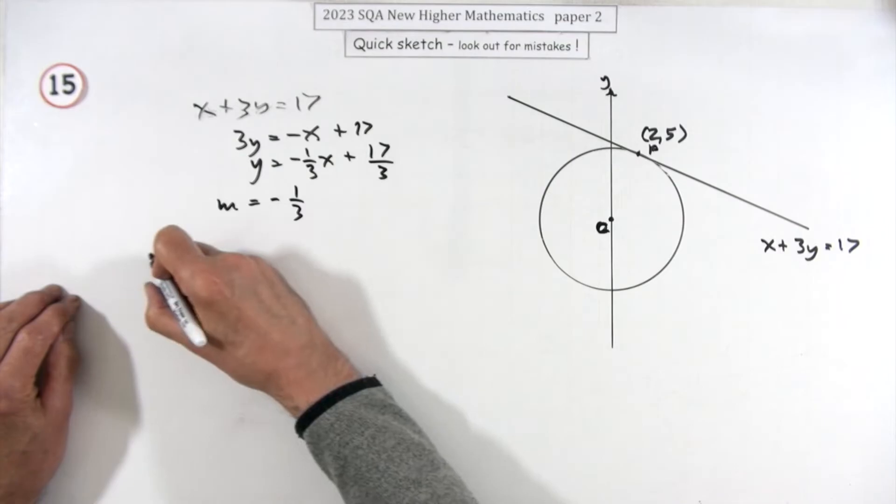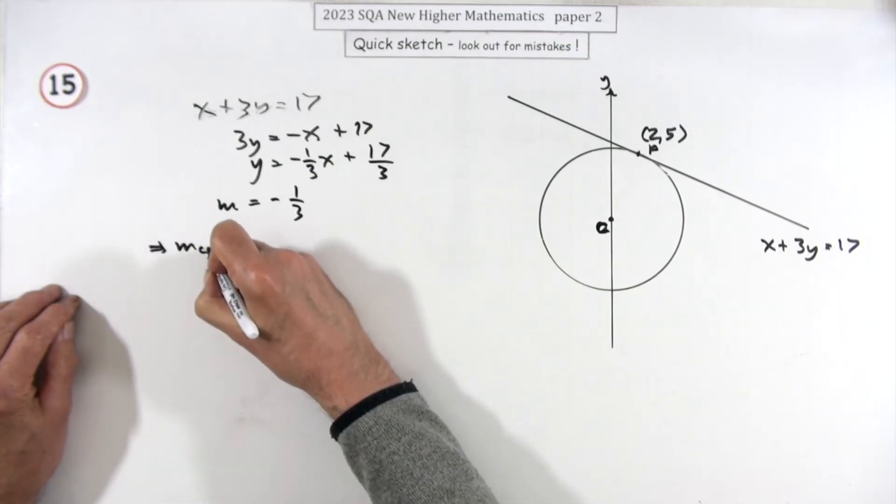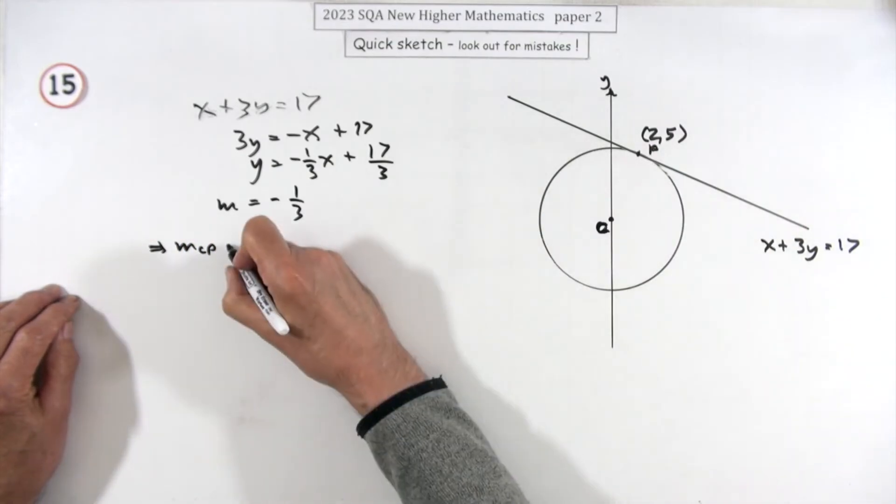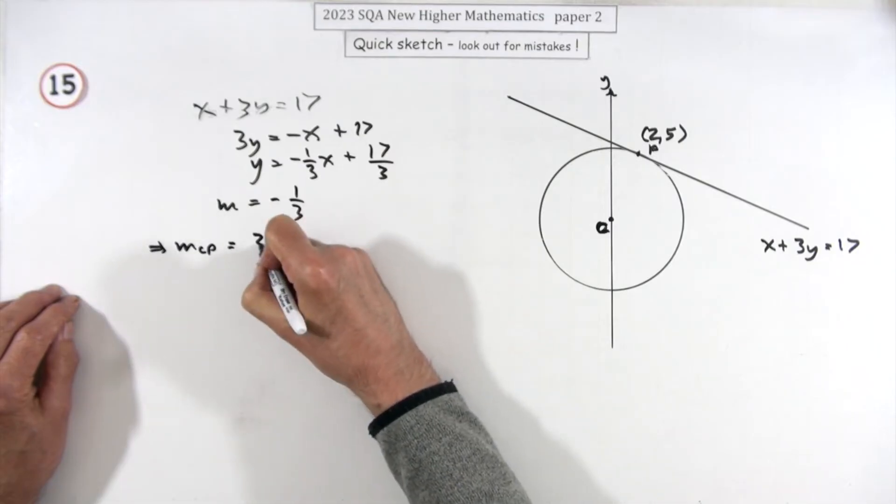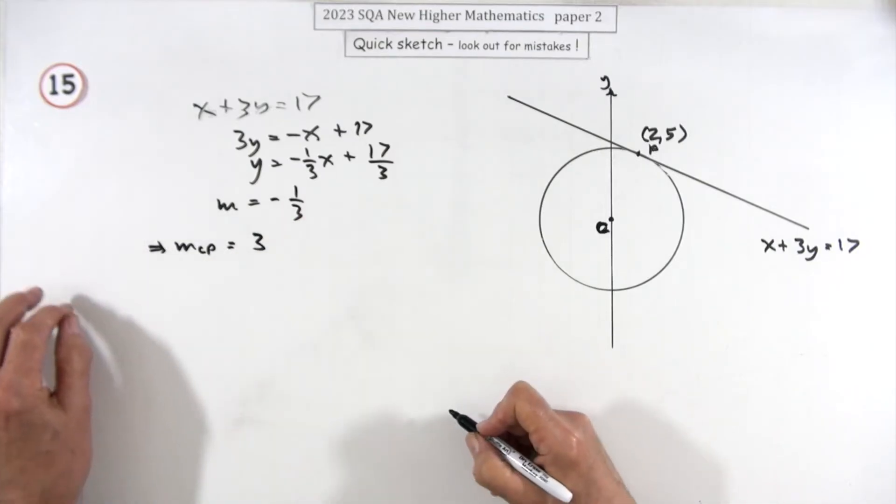Right, so that means that the gradient of CP, that radius, is going to be the negative of reciprocal, which is three, where they have to put a statement down justifying or not saying the product has to come to negative one.